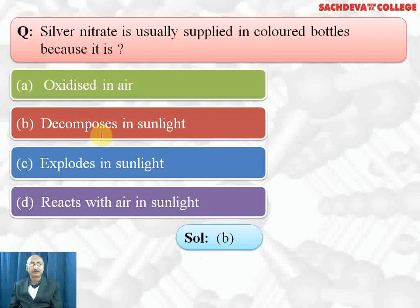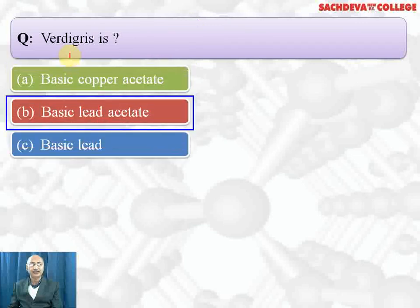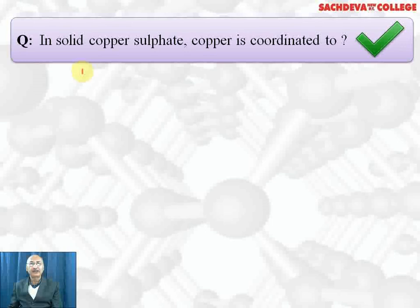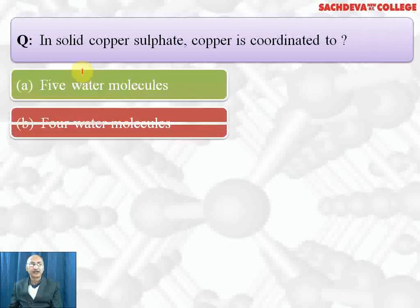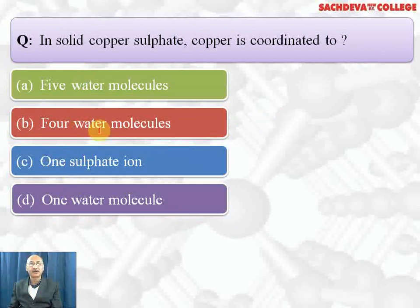Verdigris is basic copper acetate. In solid copper sulfate, copper is coordinated to four water molecules. Correct answer is four water molecules because coordination number of copper ion is four. Sulfate is outside and fifth water molecule is hydrogen bonded to sulfate ions. So total there are five water molecules, four are coordinate bonded and one of them is hydrogen bonded. This question has been asked in IIT.